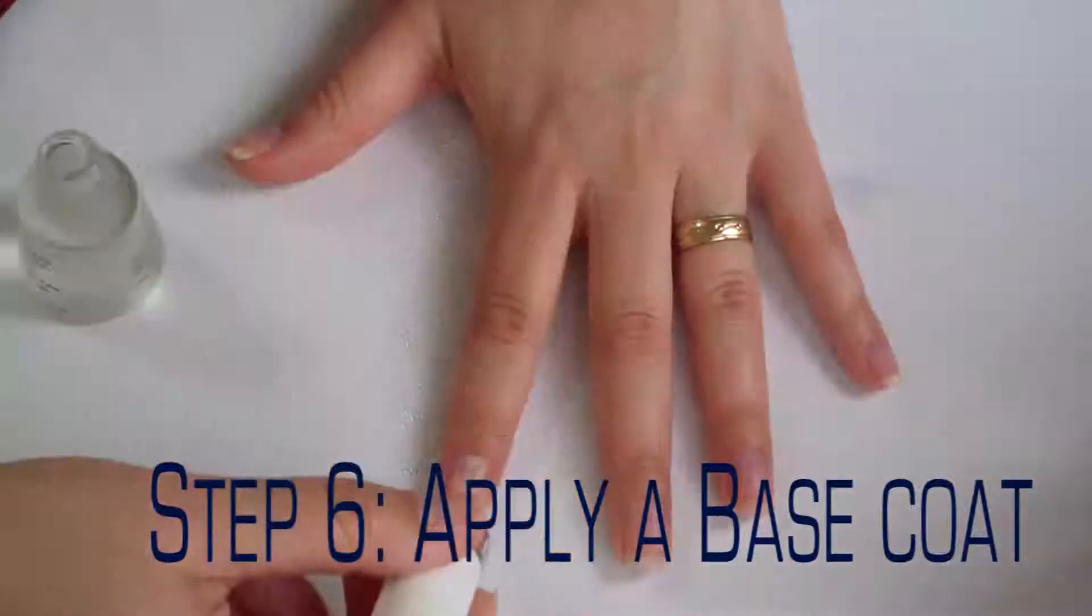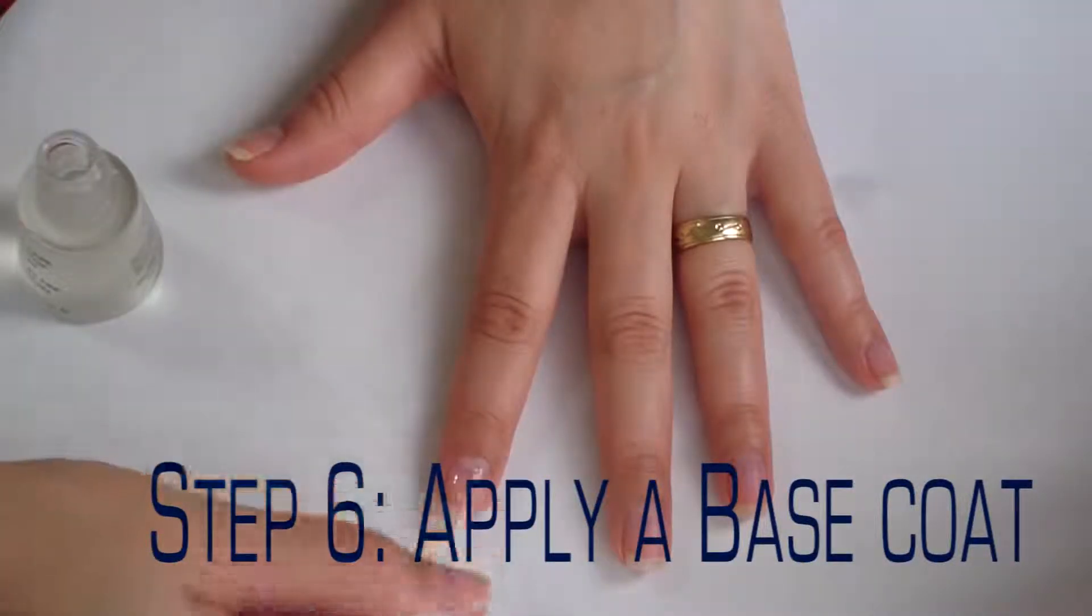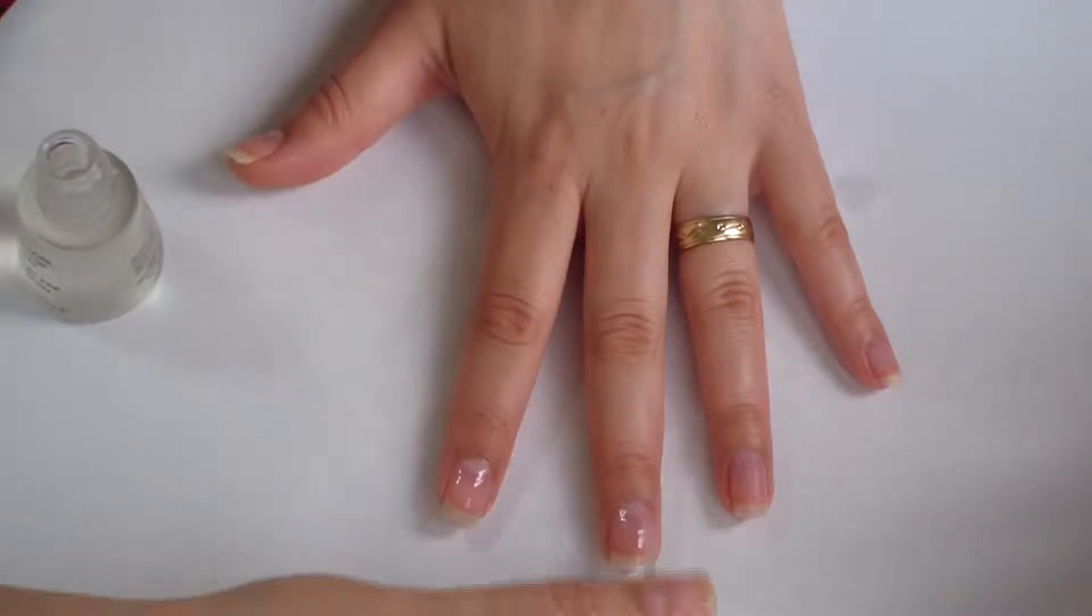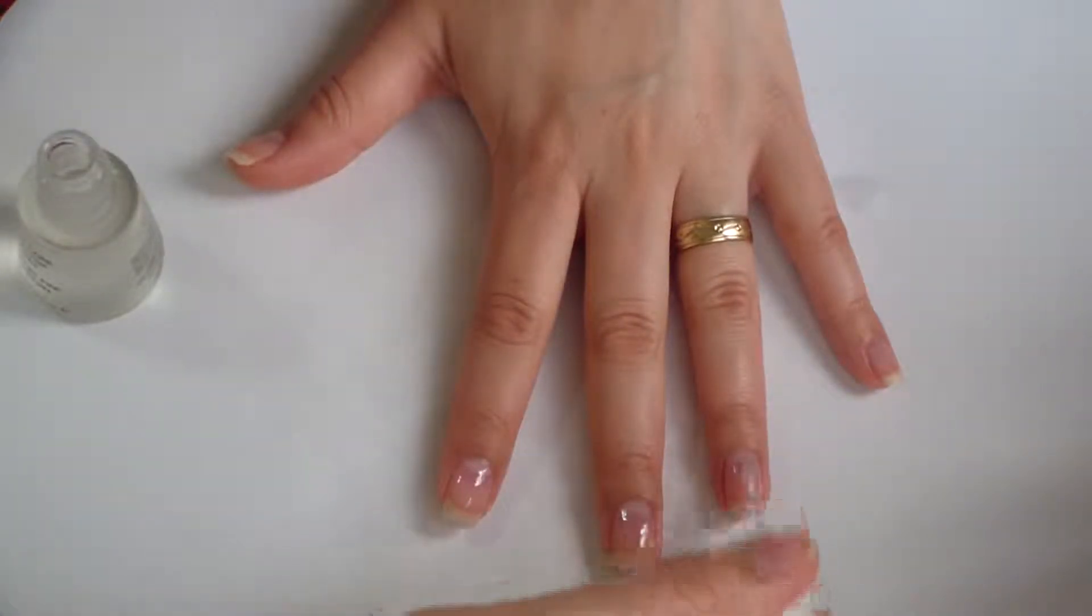Step number six, apply a base coat. You always want to apply a base coat to all of your nails before applying nail polish because this helps protect your nails from staining.